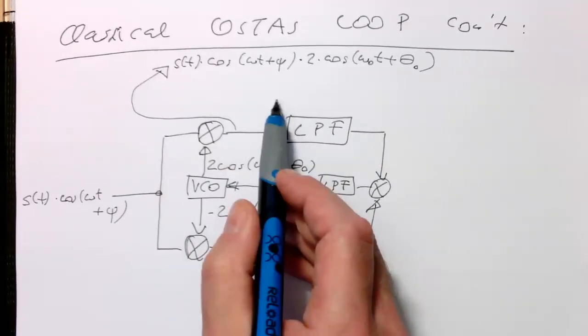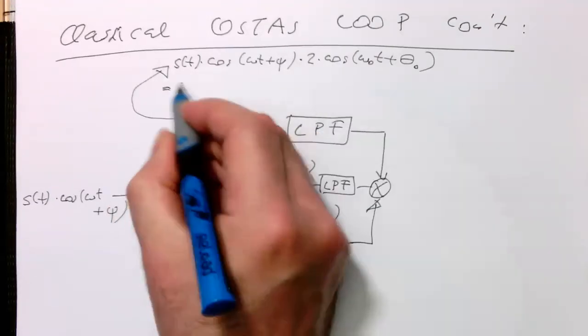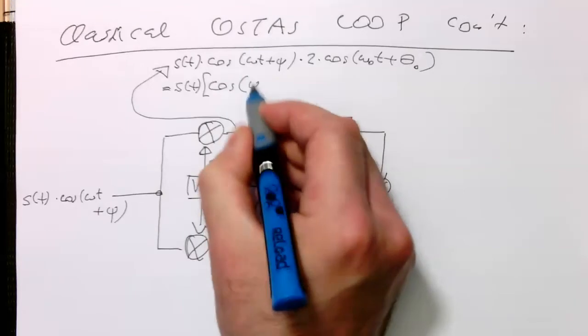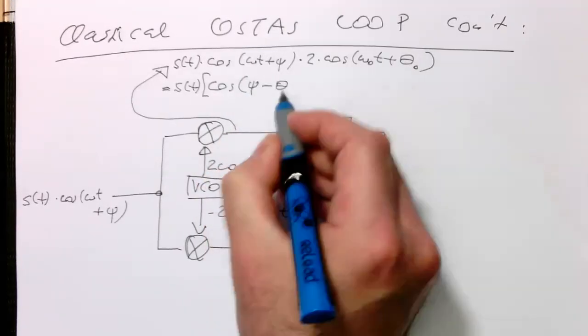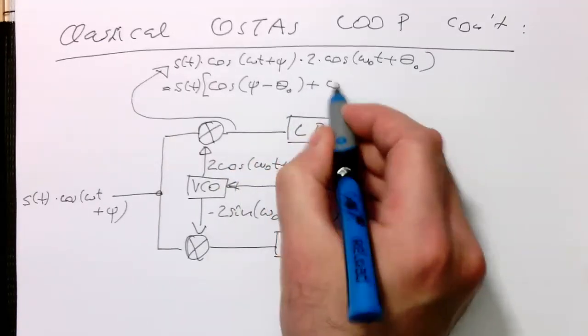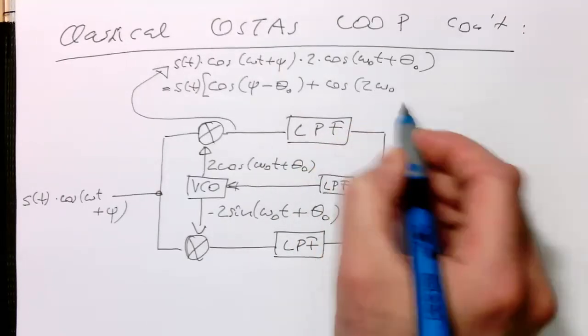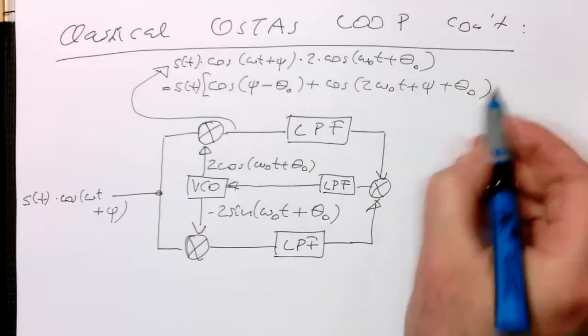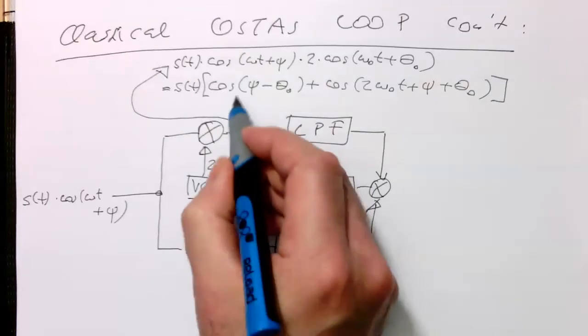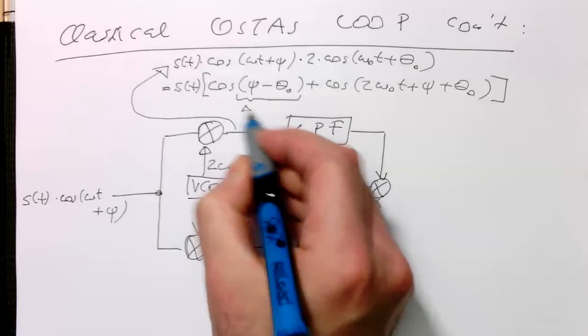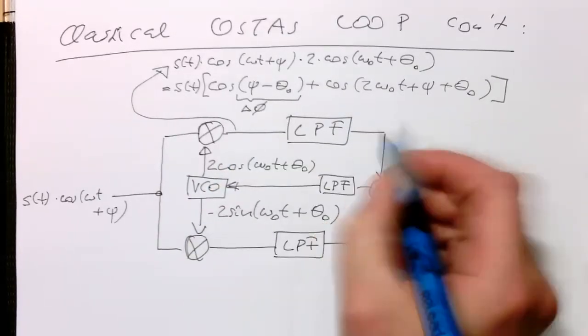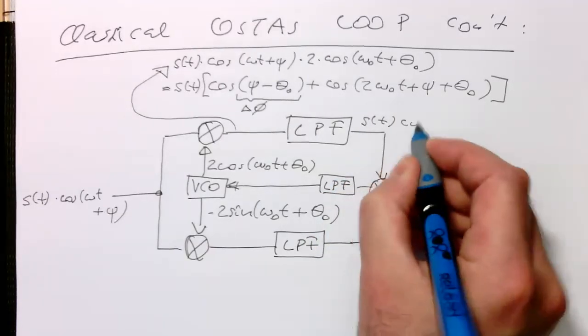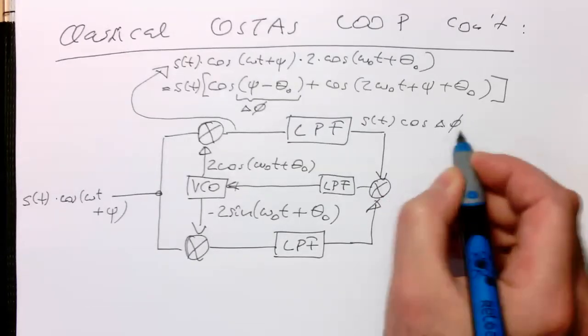And so now we just apply the classical trigonometric information here. So the S of t stays, and then we have something like cosine of C minus theta 0. And then this plus cosine of 2 omega 0 t plus C plus theta 0. And so we see already here, this one is again our error term here. So that's delta phi. So that's our correction term. So basically what we have here. So after the low pass filtering here, at the output, we have S of t multiplied by cosine of delta phi. So that's the output.